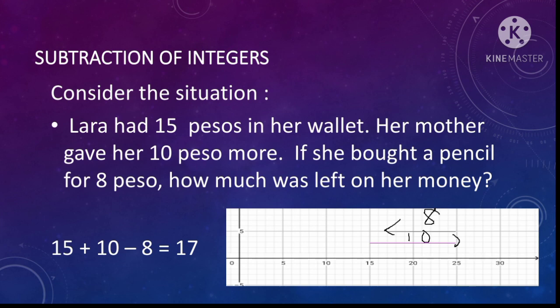Laura had 15 pesos in her wallet. Her mother gave her 10 pesos more. If she bought a pencil for 8 pesos, how much was left of her money? The mathematical sentence will be 15 plus 10 minus 8 is equal to 17.